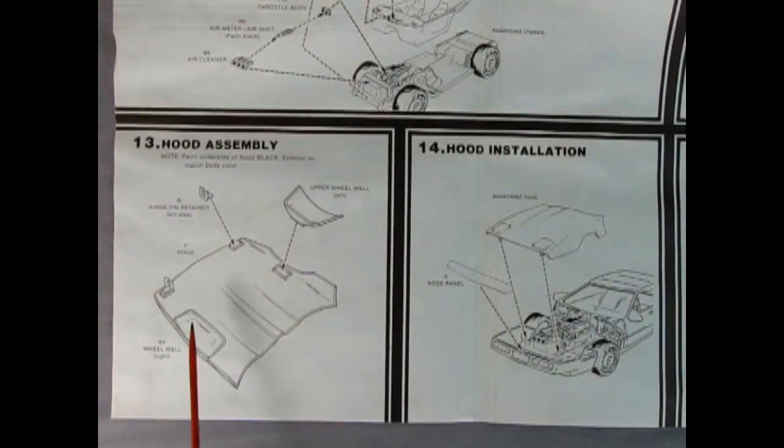We can't go driving around without a hood on this car because it looks ridiculous. Here we have our hood assembly. It says to paint the underside of the hood black, exterior to match the body color. We've got a hinge pin retainer which goes on there, then the upper wheel wells glue into place. Step fourteen shows the hood being basically pushed into place. You can see these little tabs with the bars sticking out - that's where those little hinge pin retainers will go. Then the nose panel will glue over the top just to cover that all up.